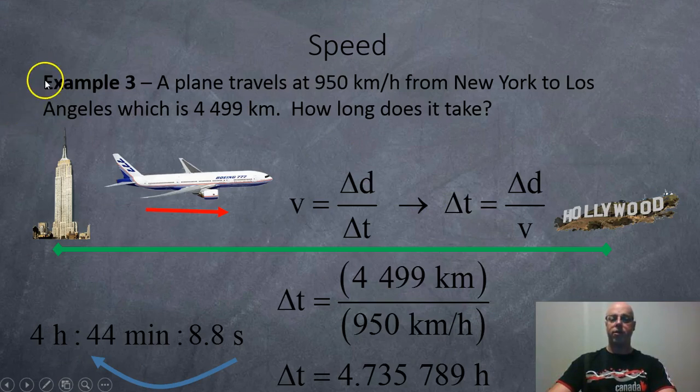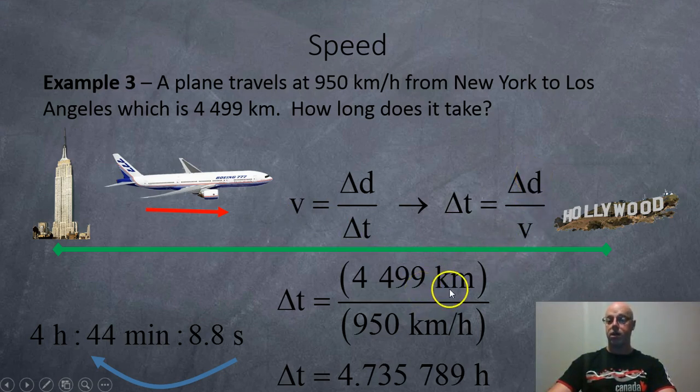Okay. Third example. We got a plane traveling at 950 kilometers per hour in speed from New York City all the way to Los Angeles, which is approximately 4,499 kilometers apart. How long would that take? So, we're just going to rearrange our formula. We're going to cross multiply the d and the v. And we get t equals distance over speed. So, we got our 4,499 kilometers divided by 950 kilometers per hour. And so, we get this huge decimal answer, 4.73579 hours. So, we got our 4 hours.